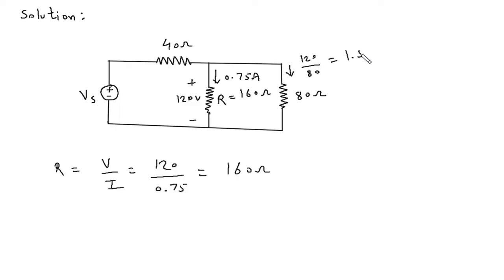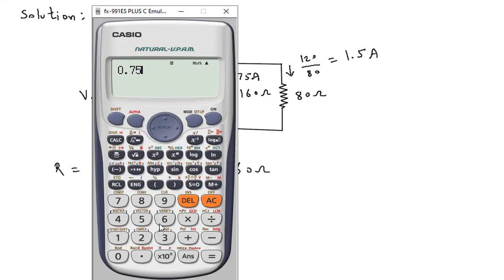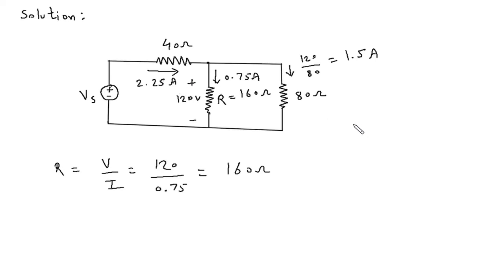1.5 ampere is the current through this 80 ohm. Now using KCL we can find the value of this current. So this current will be 0.75 and this 1.5. Summation of current entering a node is equal to summation of current leaving a node. So this current will be equal to summation of these two currents. So 0.75 plus 1.5 equals 2.5 ampere.